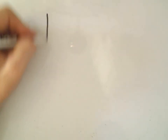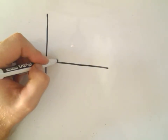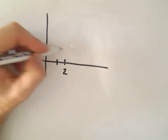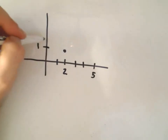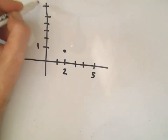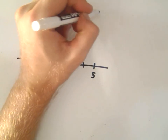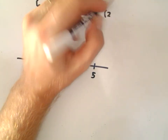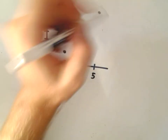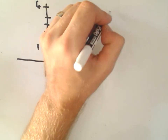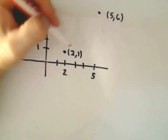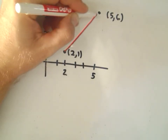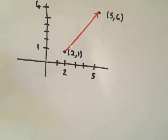Suppose we want to figure out a vector. Suppose we have the point (2, 1) and a point up here at (5, 6). We want a vector that basically starts at the point (2, 1) and stops at the point (5, 6).